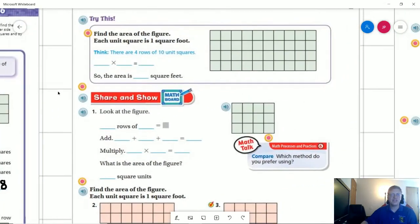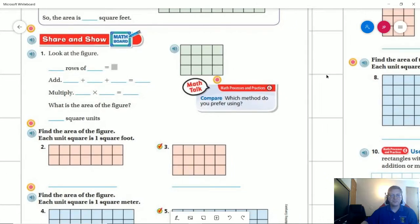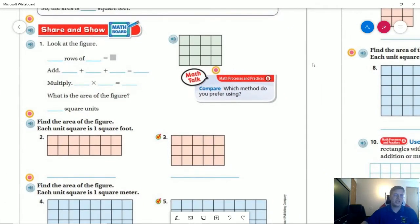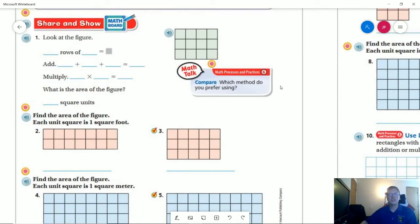So those are the three different ways that we can find areas: counting the squares, using repeated addition, or using multiplication. All three of those can give us the correct answer. I'm going to skip over this part in favor of doing the Share and Show. So let's look at number one for the Share and Show. We're going to be doing number one, number three, and number five on this page.